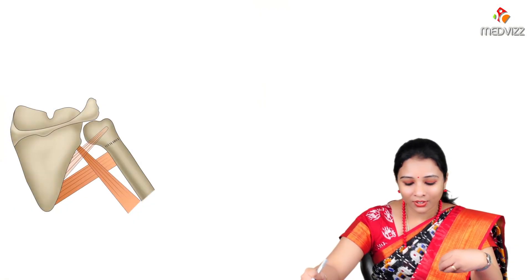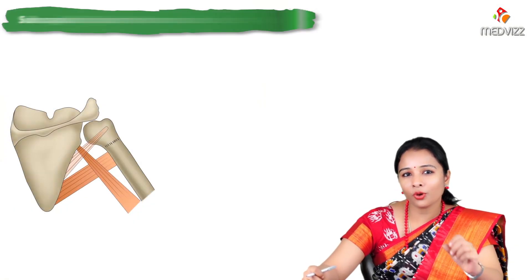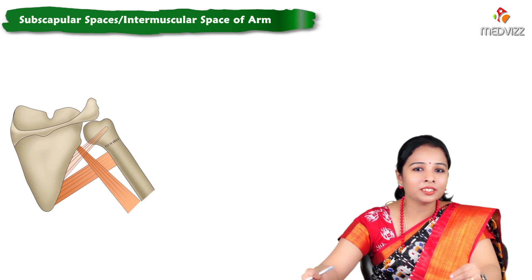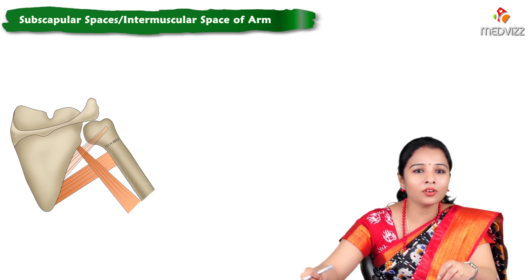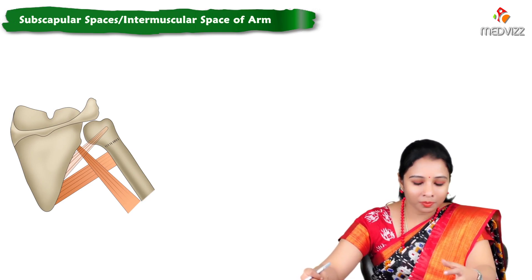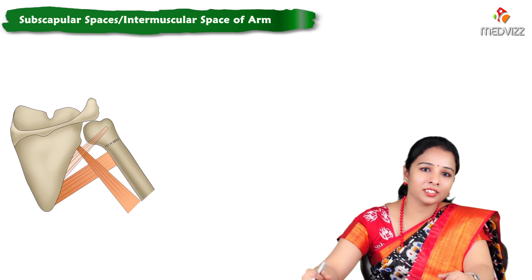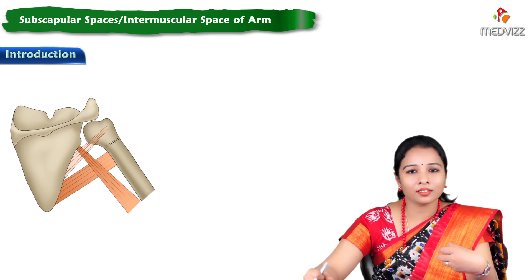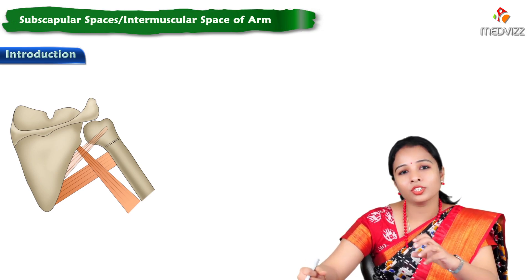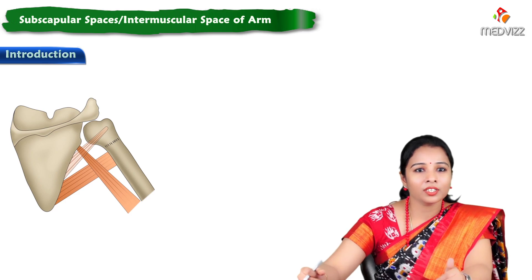Hello students, today we will learn a short topic — intermuscular spaces of the arm, or subscapular spaces, which are present on the posterior side of the arm. These spaces are very important during surgeries. So it is a short topic, we will finish it off very soon.